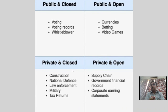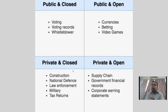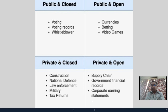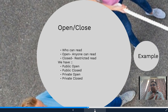For a defense application, you would choose a private closed platform. For tax returns, it should also be private closed. For supply chain, where only vendors have write permission but all customers can read, it is private open. For cryptocurrencies and video games where everyone can read and write, it should be a public open platform. If restrictions on reading are needed but writing is allowed, it is public closed. Different types of applications can be built using public and private platforms.